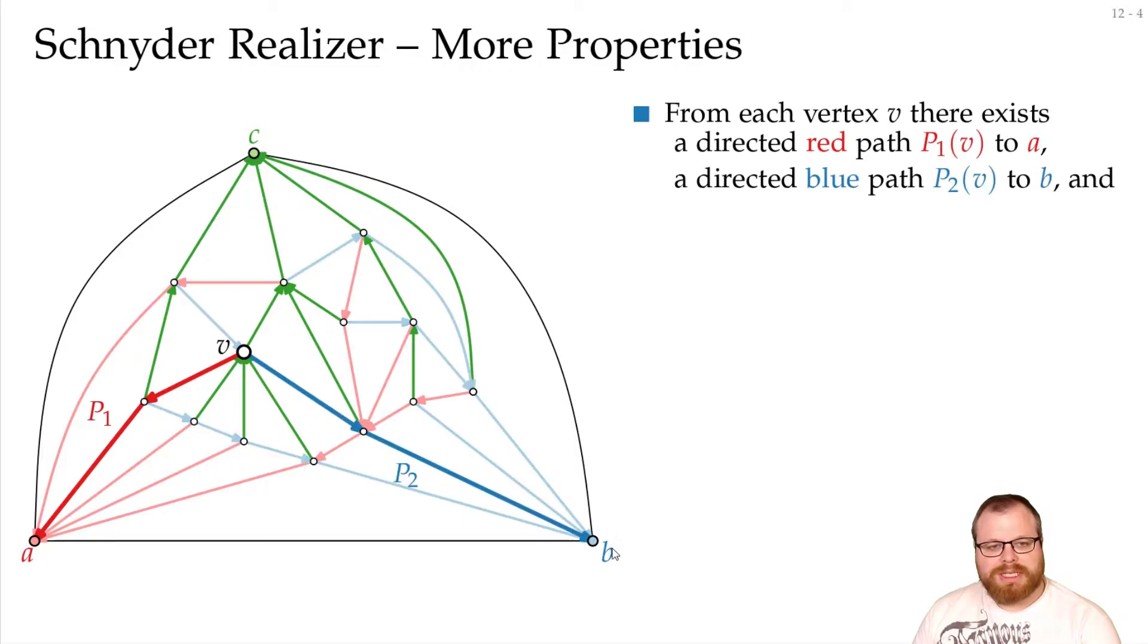If we walk along the blue tree, we get a path that goes to vertex b. And if we walk along the green tree, we have a path that follows us to vertex c. So we have three directed paths to this outer face.